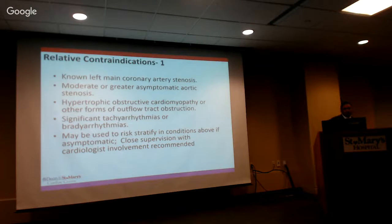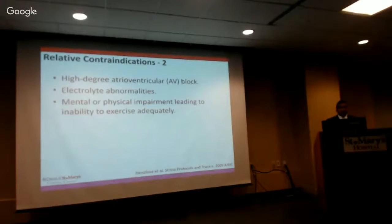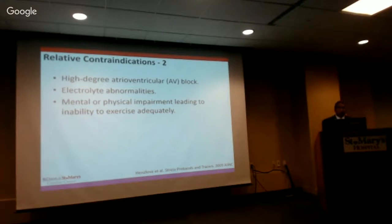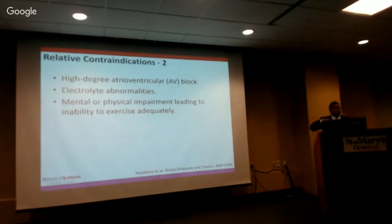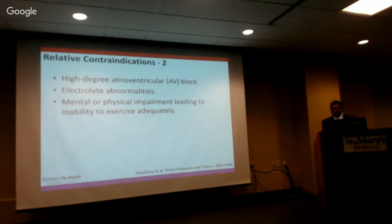High-degree AV block needs caution because patients can deteriorate during a stress test — progressing from 2:1 block to complete heart block if the block is lower in the conduction system. Patients with electrolyte abnormalities can develop severe arrhythmias, and those with mental or physical impairment restricting exercise can also run into trouble.